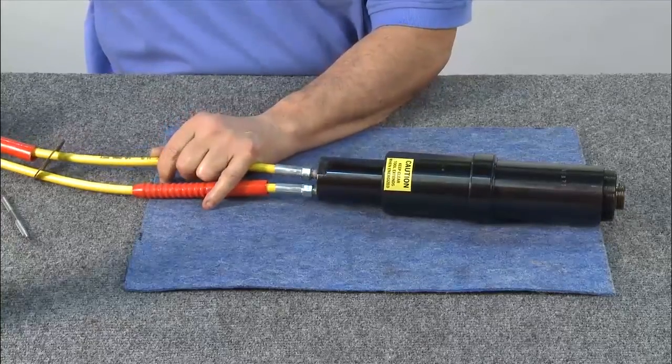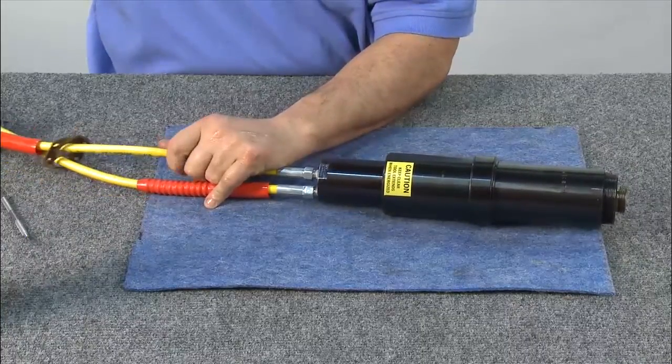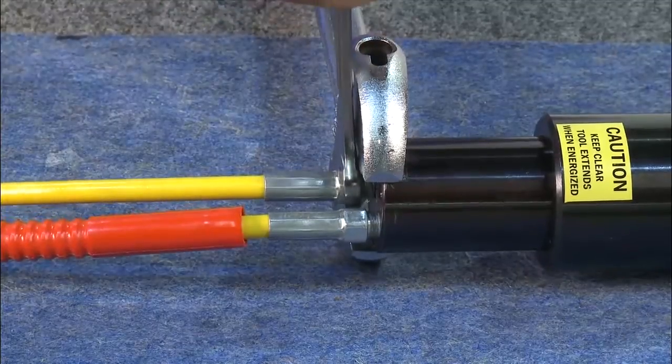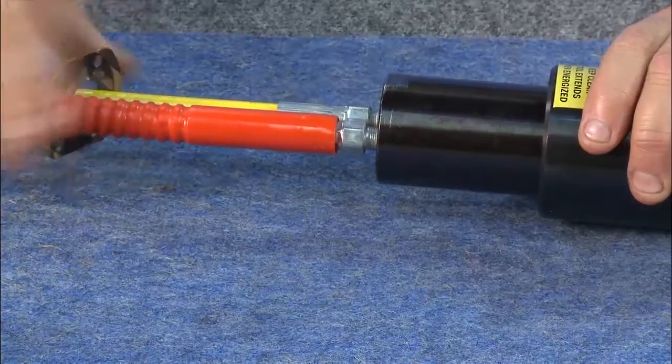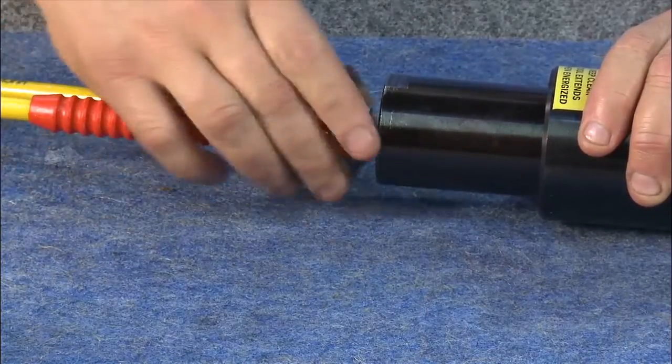Next, reinstall the hose. Tighten the hose with a wrench and slide the rubber hose reliefs and gasket back in place.